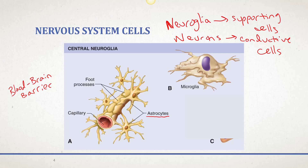This is why we end up with fevers when we get certain infections. Astrocytes are cells that surround the blood vessels feeding into the central nervous system, and they super regulate the materials that transfer from the lumen of the blood vessel into the brain tissue. We call them astrocytes because they look like star-shaped cells.